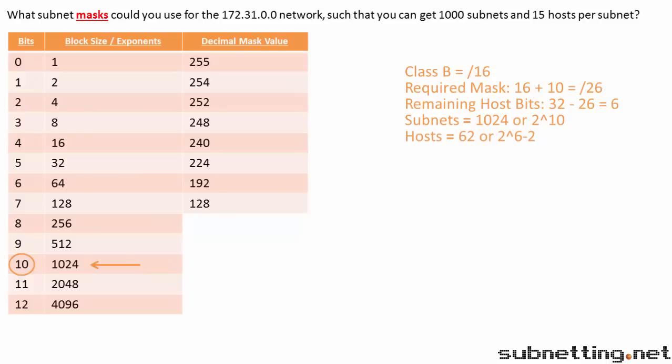So now let's convert our shorthand to decimal notation. Counting up, we start with 24, then 25, 26. Our subnet mask for the interesting octet is 192. Since 26 is between 24 and 32, we know we are in the 4th octet. So our decimal mask is 255.255.255.192.